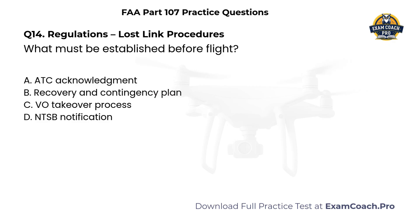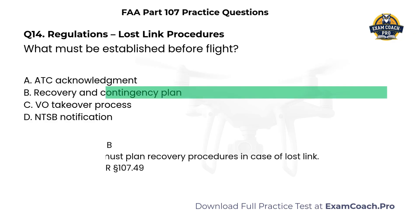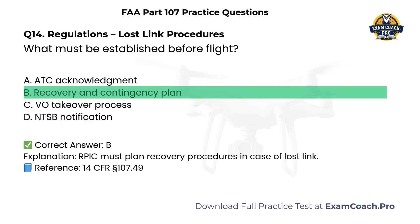Regulations. Lost link procedures. What must be established before flight? A. ATC acknowledgement. B. Recovery and contingency plan. C. Visual observer takeover process. D. NTSB notification. Correct answer: B. The remote pilot in command must plan recovery procedures in case of lost link.